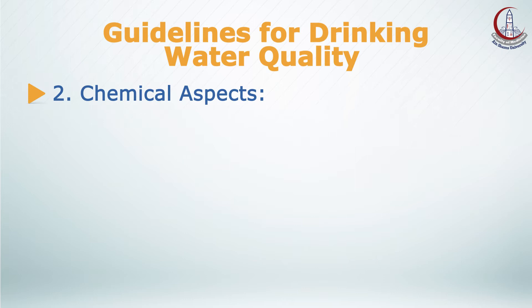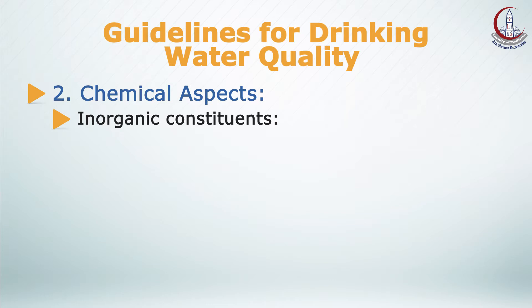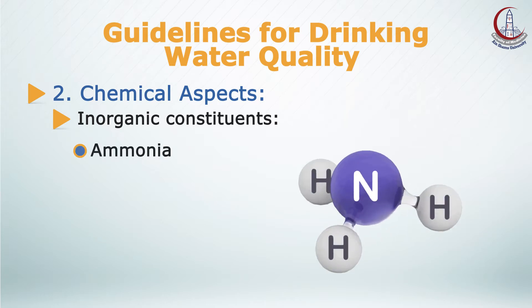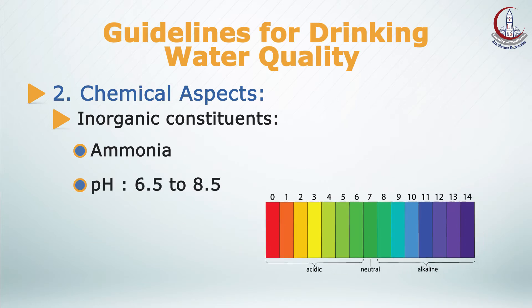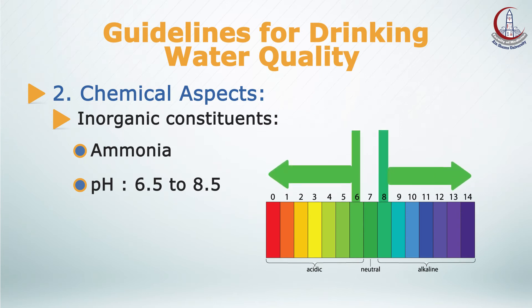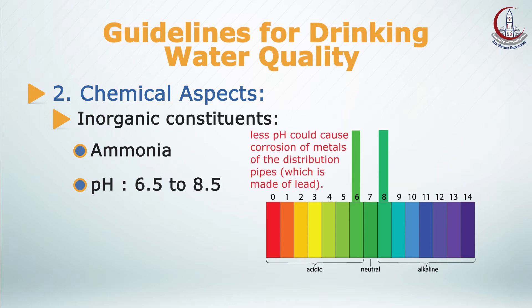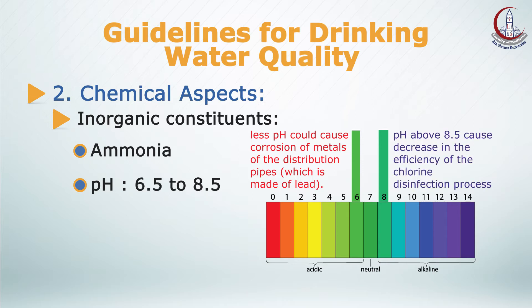Chemical aspects are also important. They include inorganic constituents — for example, ammonia in water is an indicator of possible bacterial, sewage, and animal waste pollution. Regarding pH, the acceptable range is between 6.5 to 8.5. A lower pH could cause corrosion of metals in the distribution pipes, which may be made of lead. A pH above 8.5 causes a decrease in the efficiency of the chlorine disinfection process.